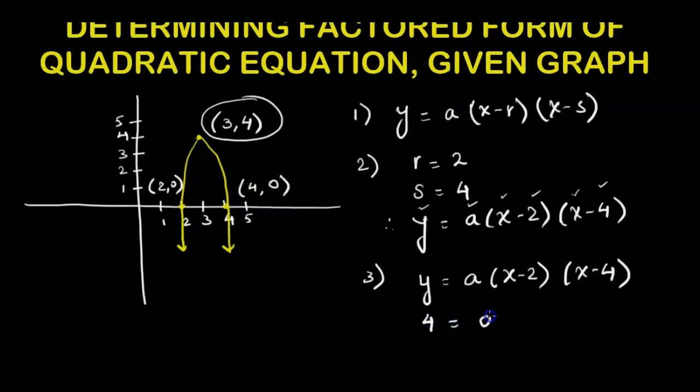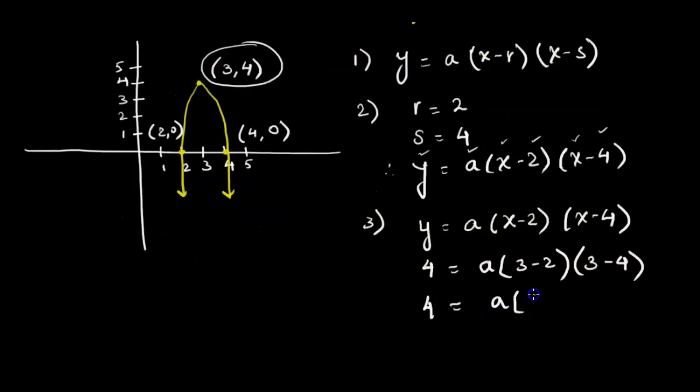y we have is 4, x we have is 3. 3 minus 2 gives us 1, 3 minus 4 is negative 1, and we solve for a.